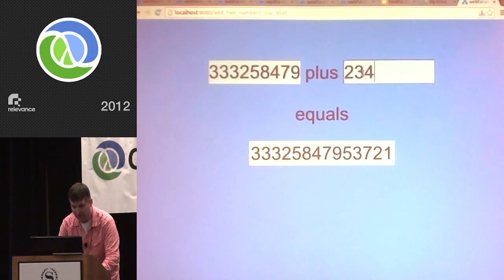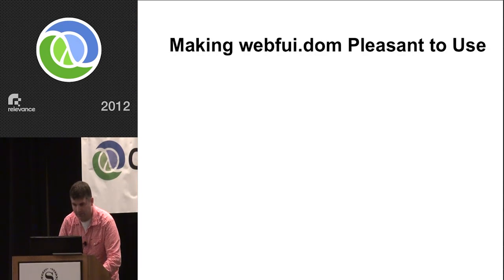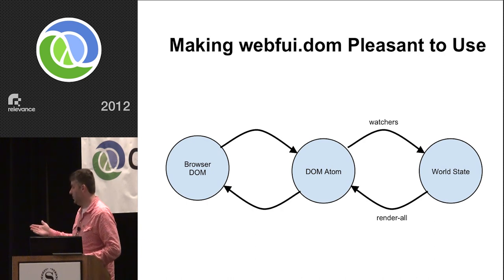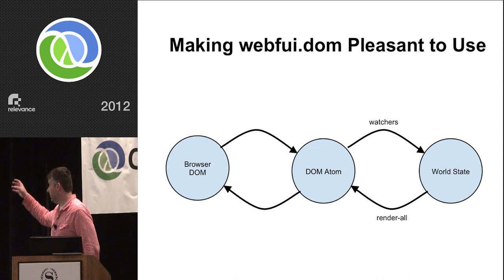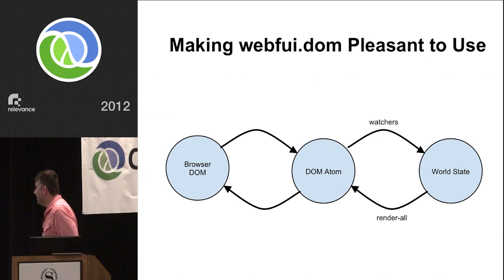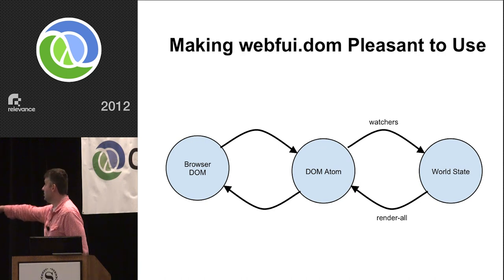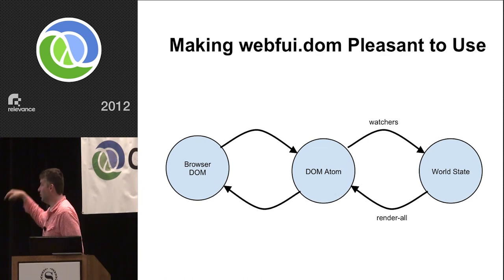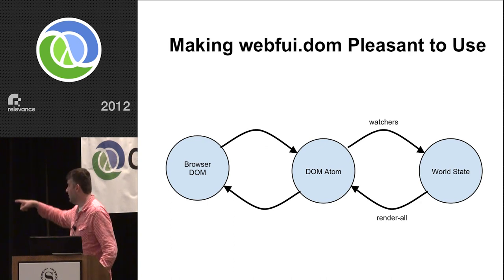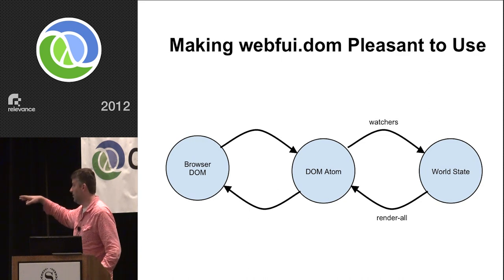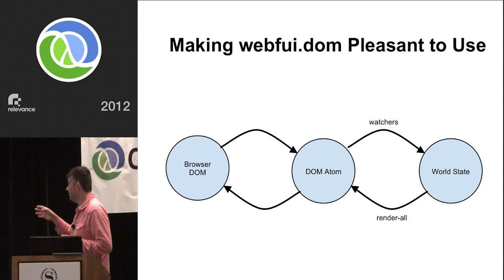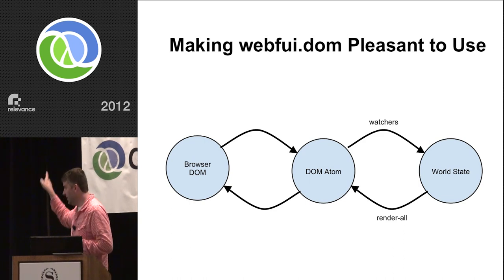The code was really ugly. How do we make WebFui pleasant to use? We want to add another item into this chain — create a world state object inside our program. When the DOM atom changes and our watchers get called, we just update that state object. The render-all function, instead of taking the previous version of the HTML, takes the state object as a parameter. This way we can write all our code as functional — the watchers and the render-all function don't have to talk to the outside world. This kind of design is basically what people used to call data flow programming, where we have boxes with data structures, and when one changes, we propagate that.